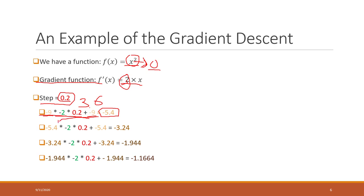We bring this new point into our second step and again calculate using the opposite direction of the gradient function, times the step size, so we know which direction and how far to move from our second point.